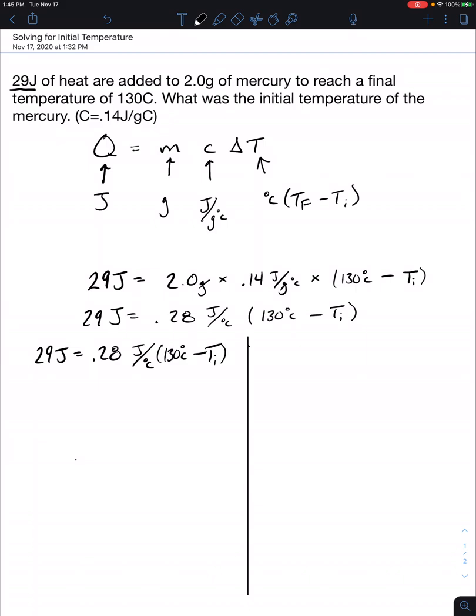So we're going to go ahead and combine some terms. We're going to divide out 0.28 joules per degree Celsius to both sides. So 29 divided by 0.28 is 103.6. You can cancel out joules since you have one in the numerator and one in the denominator and that's equal to 130 degrees Celsius minus the initial temperature Ti.